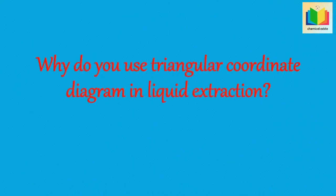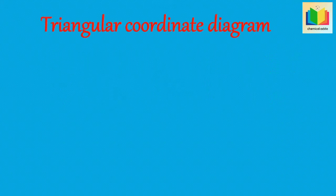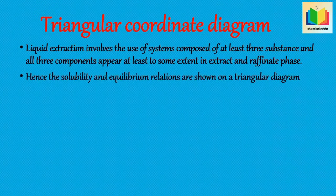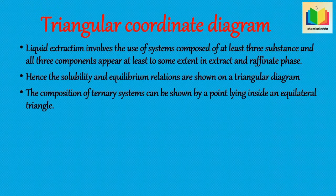Next question: why do we use a triangular coordinate diagram in liquid extraction? Liquid extraction involves the use of systems composed of at least three substances, and all three components appear at least to some extent in both the extract and raffinate phases. The three components — feed solvent, solute, and solvent — are present in both phases. Hence, to show the composition of the three components, the solubility and equilibrium relations are shown on a triangular diagram. The composition of ternary systems can be shown by a point lying inside an equilateral triangle.